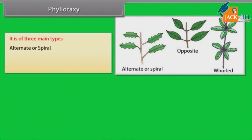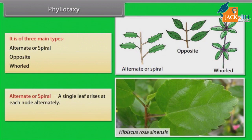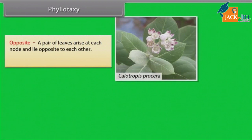Alternate or spiral: a single leaf arises at each node alternately. Example: Hibiscus rosa-sinensis. Opposite: a pair of leaves arise at each node and lie opposite to each other. Example: Calotropis procera.